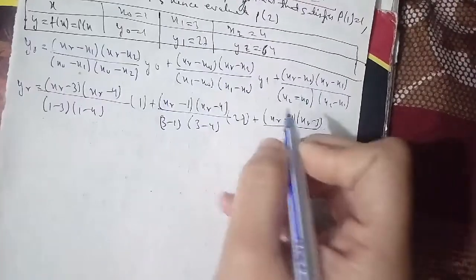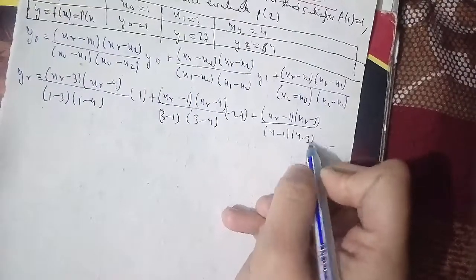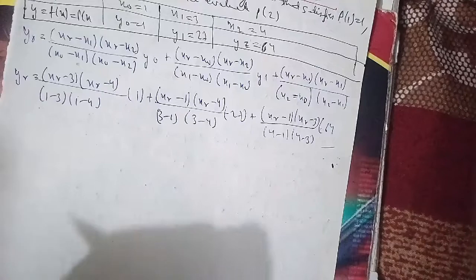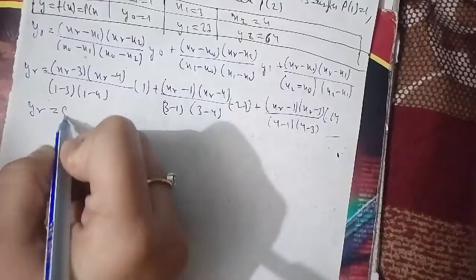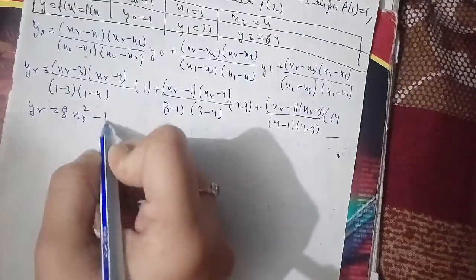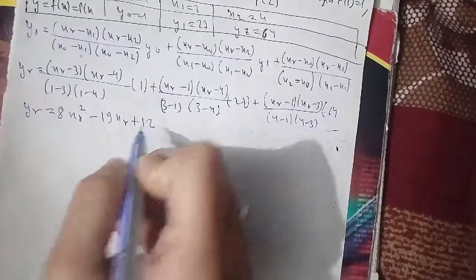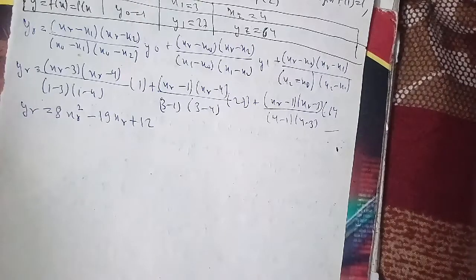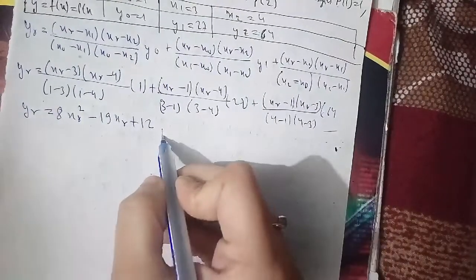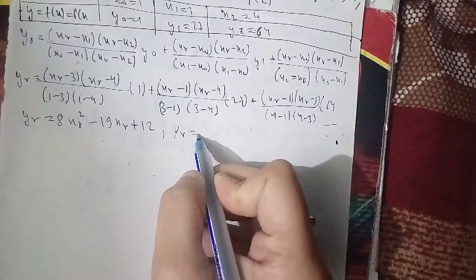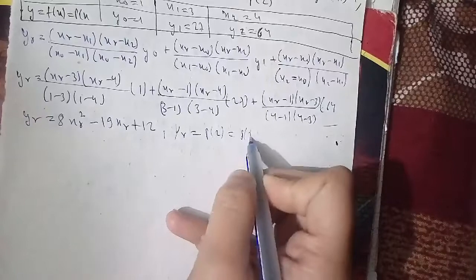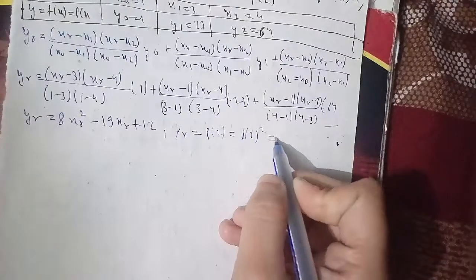On simplifying, we get yr = 8xr² - 19xr + 12. This is the required quadratic polynomial passing through the given points. To obtain p(2), we put xr=2 in the above equation: p(2) = 8(2²) - 19(2) + 12 = 32 - 38 + 12 = 6.